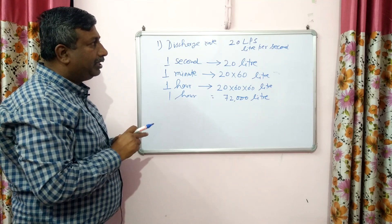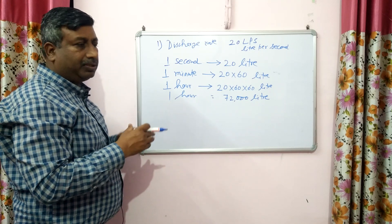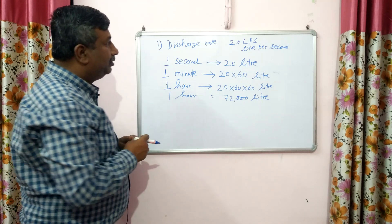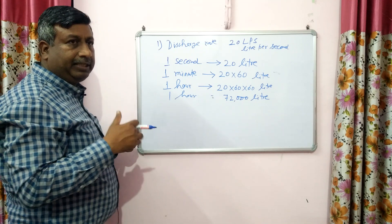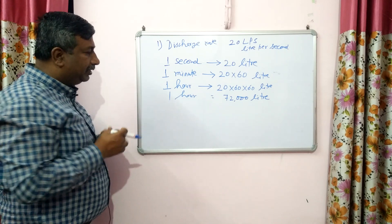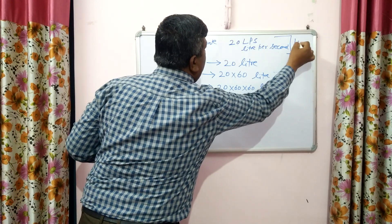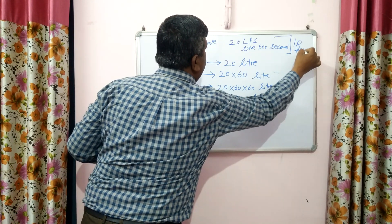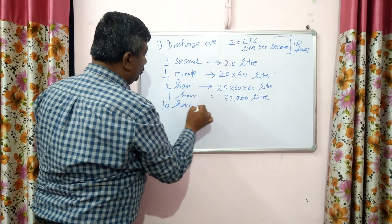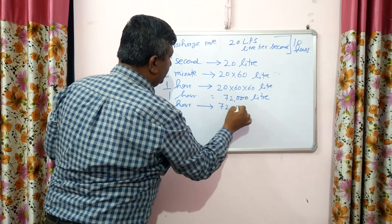Another important thing is the time — for how many hours we get irrigation. Suppose the time is 10 hours; in a question it may be 8, 12, or 6 hours. For easy calculation, suppose we take the discharge rate running for 10 hours.